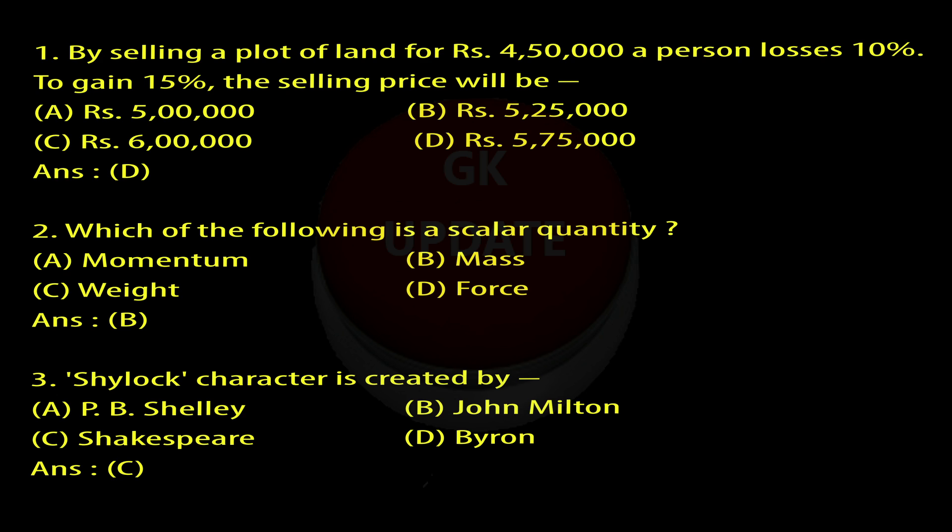Question 1: By selling a plot of land for Rs. 4,50,000 a person loses 10%. To gain 15%, the selling price will be: A. Rs. 5,00,000, B. Rs. 5,25,000, C. Rs. 6,00,000, D. Rs. 5,75,000. Answer: D.